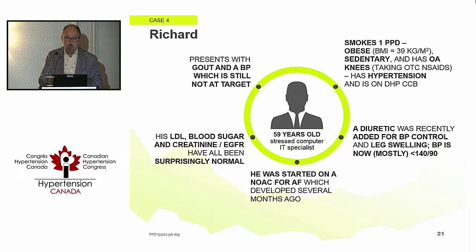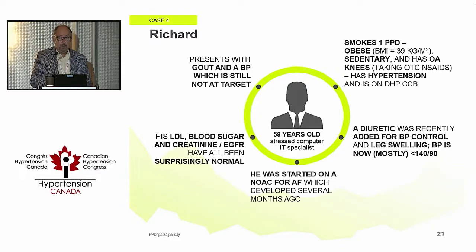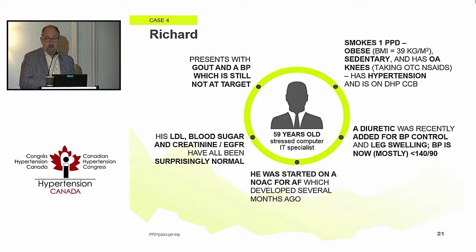Let's do one more. This is Richard: smoker, obese, sedentary, has some OA and is taking NSAIDs, hypertension managed with a dihydropyridine CCB. A diuretic was started for related peripheral edema — though diuretics do not help DHP-induced edema. Blood pressure is now okay. He's on a NOAC/DOAC, a novel anticoagulant for atrial fibrillation, which developed several months ago.